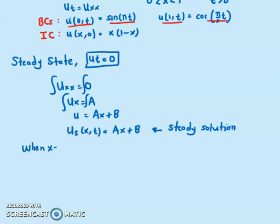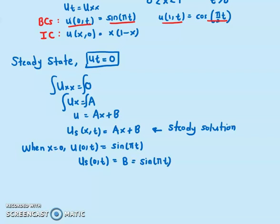For the steady state solution u_s(x,t) = ax + b, we apply the boundary conditions. When x = 0, the condition is u(0,t) = sin(πt), so we have u_s(0,t) = b = sin(πt). So b equals sin(πt).